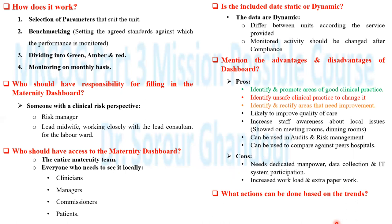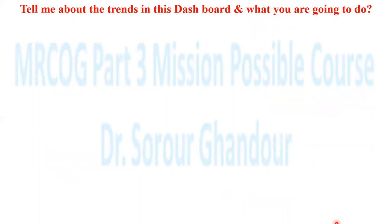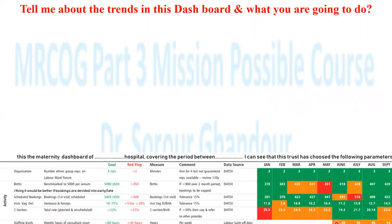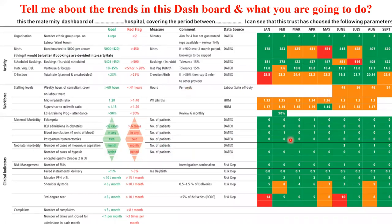You can do board meetings, audits, and feedback sessions. From these, you will come out with recommendations to change or improve the practice in that area to avoid deviation from the standard. In the exam, you will be given the maternity dashboard and asked to comment on the trends and what you are going to do. For example, you can say: this is the maternity dashboard of [hospital name] covering the period between January and September. I can see that this trust has chosen the following parameters.